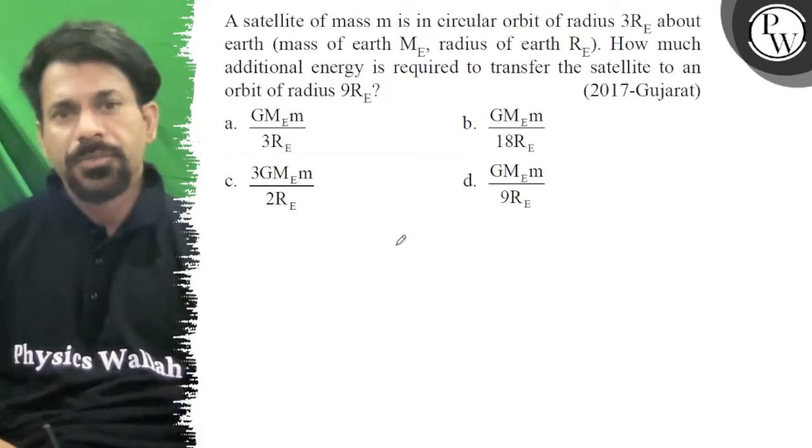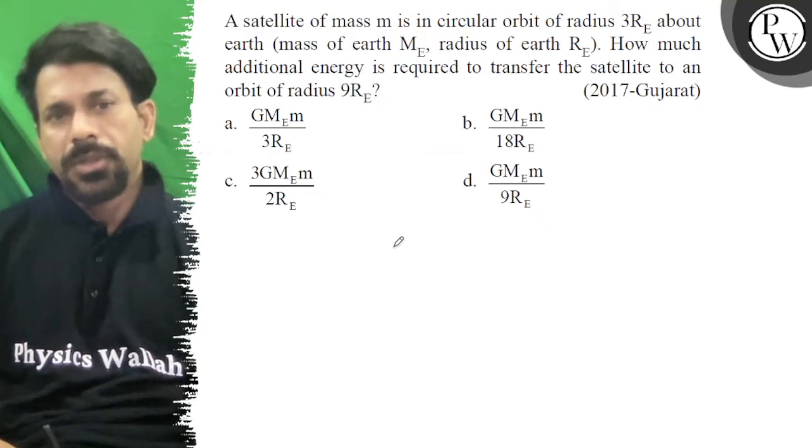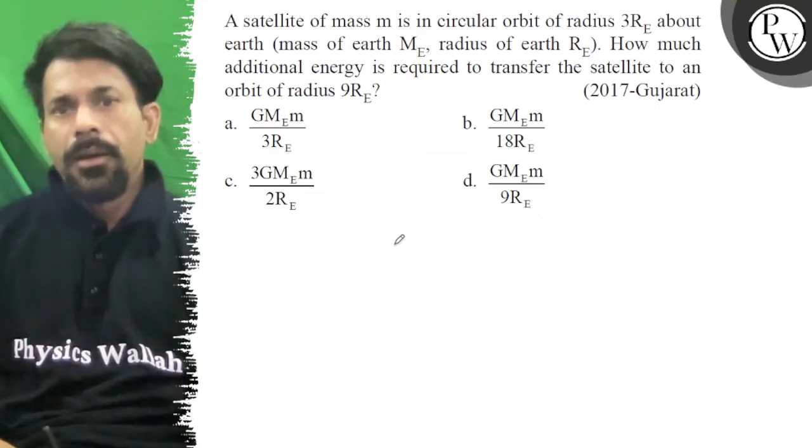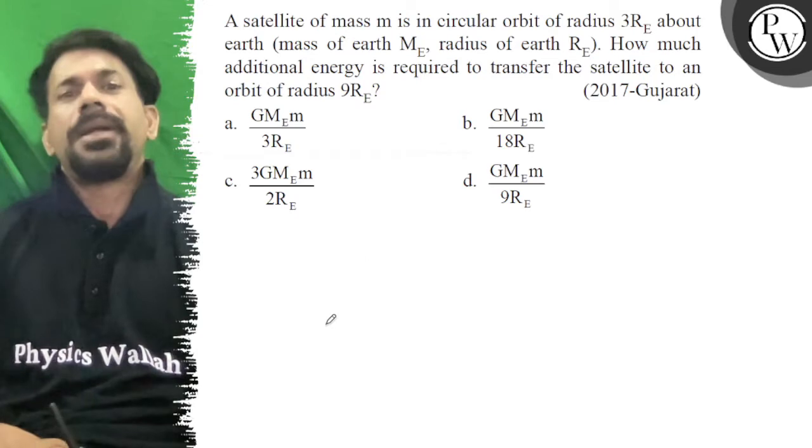Hello, let's see the question. A satellite of mass small m is in circular orbit of radius 3Re about Earth. How much additional energy is required to transfer the satellite to an orbit of radius 9Re?